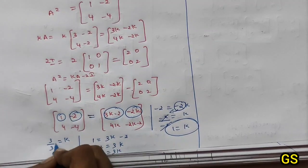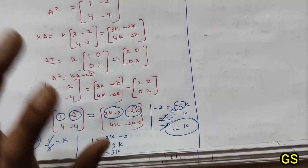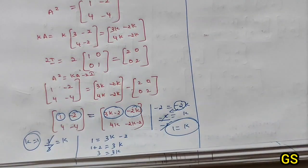3 divided by 3 equals k. So k equals 1. The answer is k equals 1. Next video coming soon. Thank you.